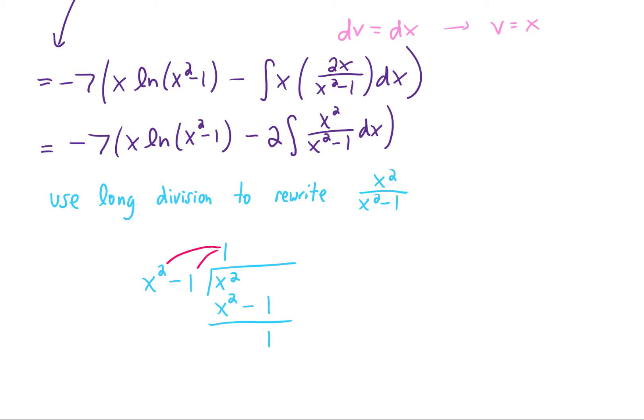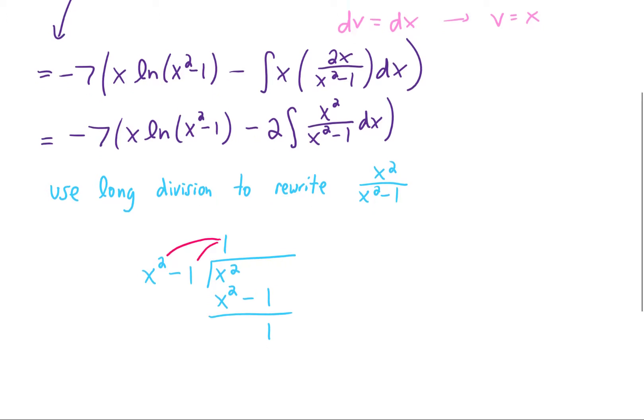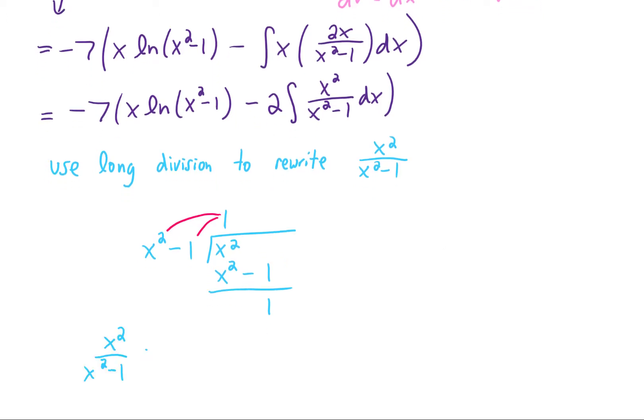Subtracting, then, is going to give us a remainder of positive 1. So that tells us that we can rewrite x squared over x squared minus 1 as the quotient plus the remainder over the original divisor.